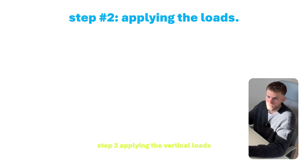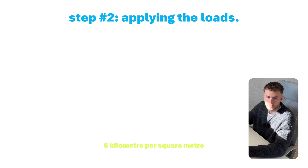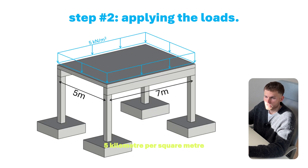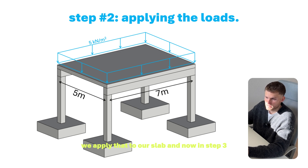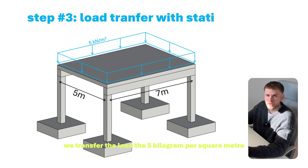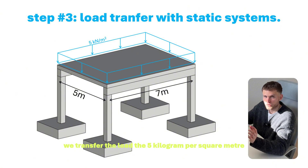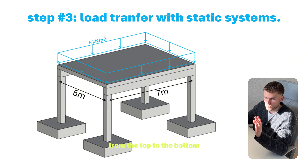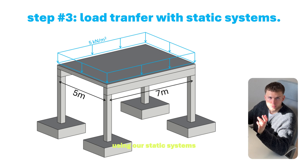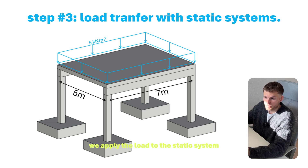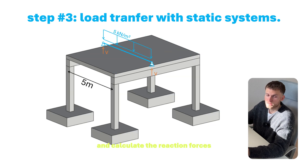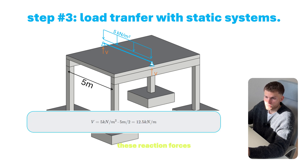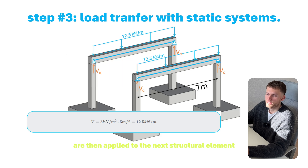Step two: applying the vertical loads. Let's say the design load of the slab is 5 kN per square meter. We apply that to our slab. Then in step three, we transfer the load of 5 kN per square meter from the top to the bottom using our static systems. We apply the load to the static system, calculate the reaction forces, and those reaction forces are then applied to the next structural element.